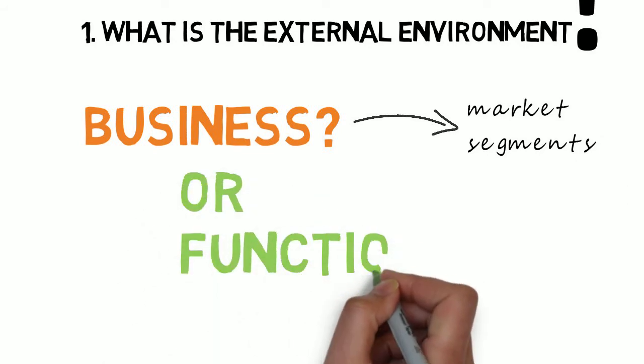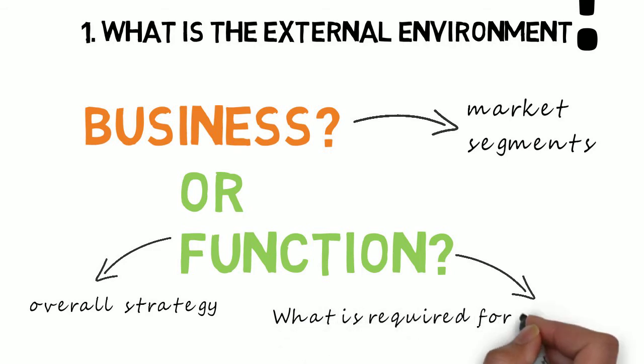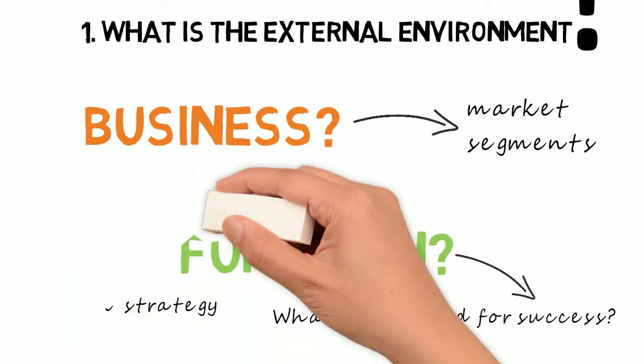If the strategy is for a function or a department, then the external environment would include the overall strategy for the business that the function supports and what is required to make that strategy a success. We will come back to the difference between business and functional strategy in another video.